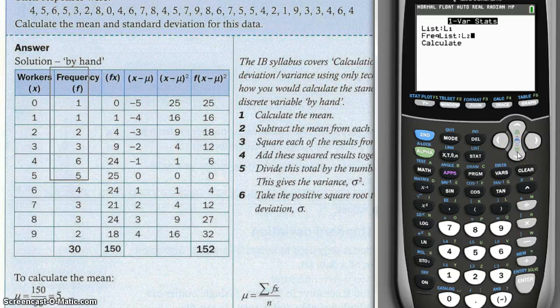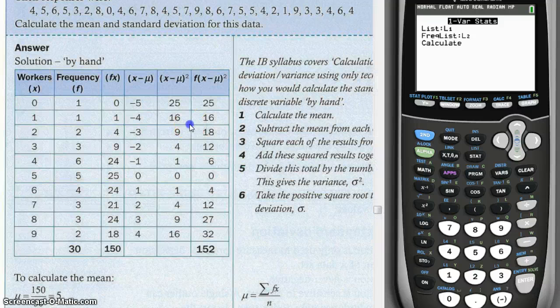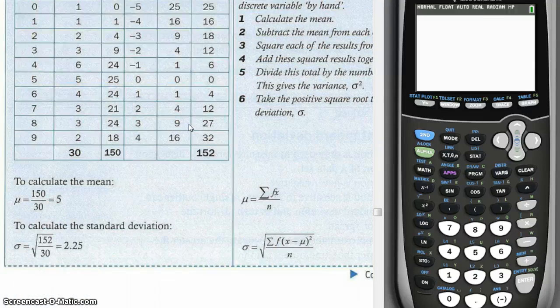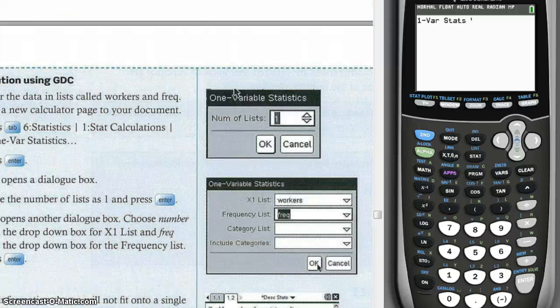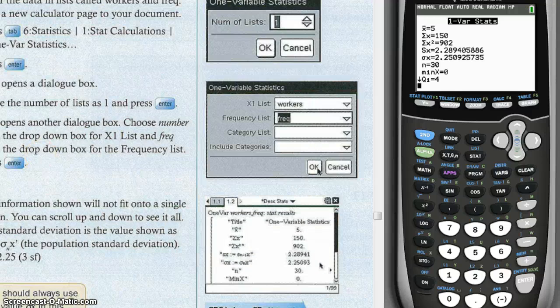And then go to calculate. So according to the textbook, the standard deviation should be 2.23, 2.25.